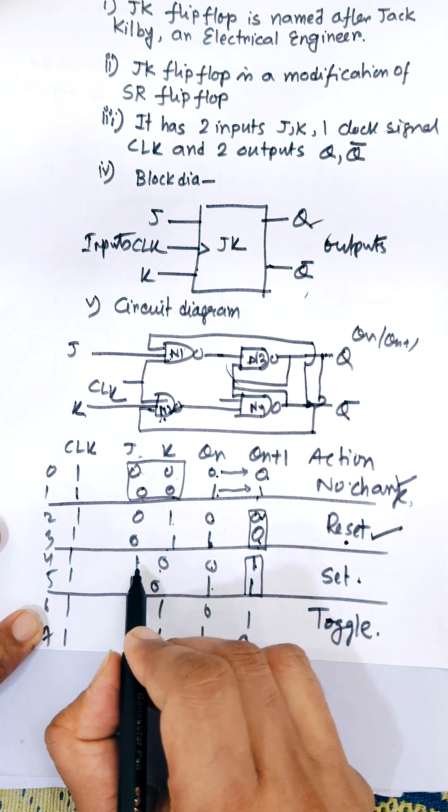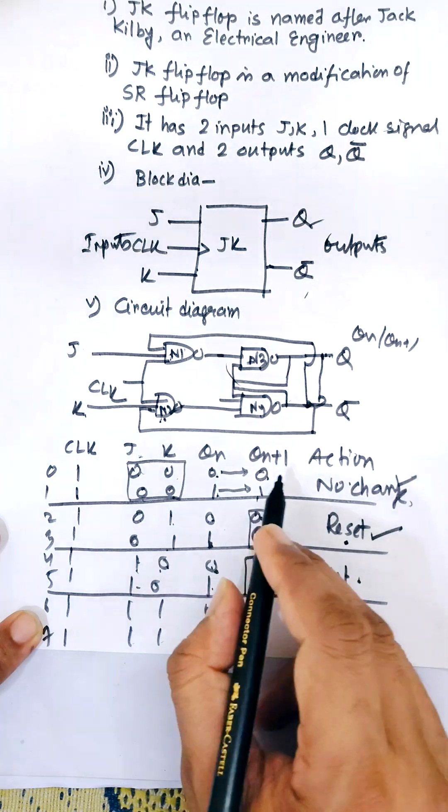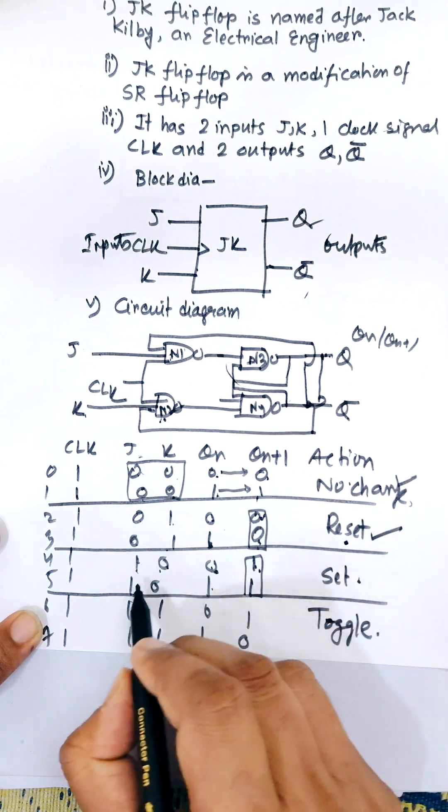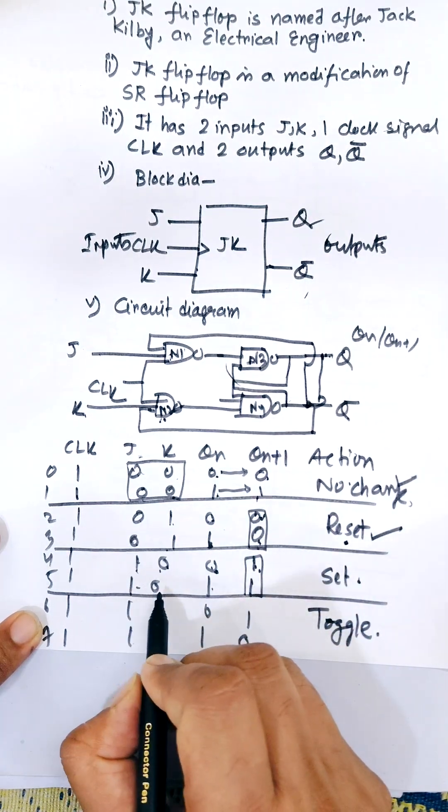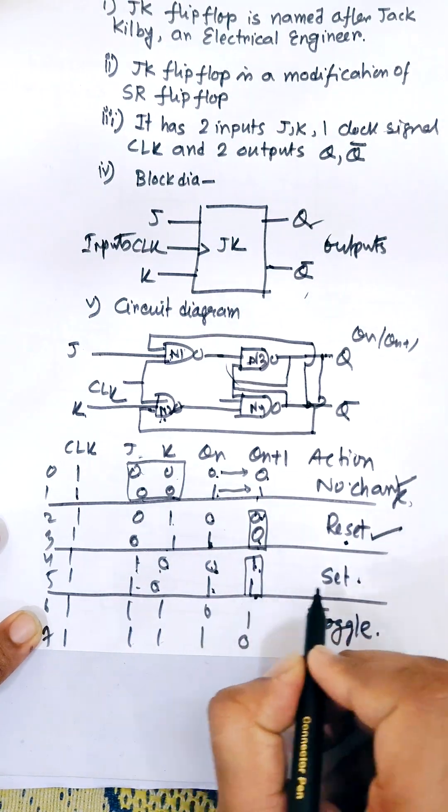Now when J equals 1, K equals 0 and QN is 0, then QN+1, the next state, will be 1. When J equals 1, K equals 0, QN is 1, output QN+1 is also 1. That means set. Here both are 1, that means it is set.